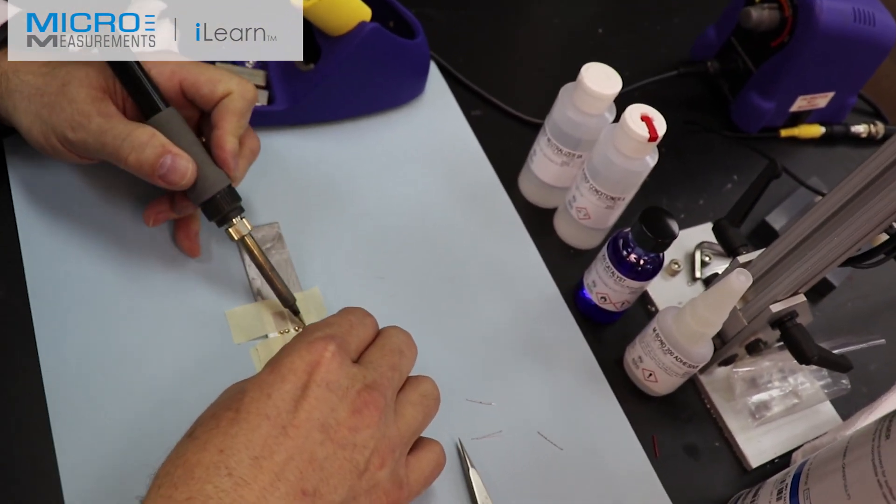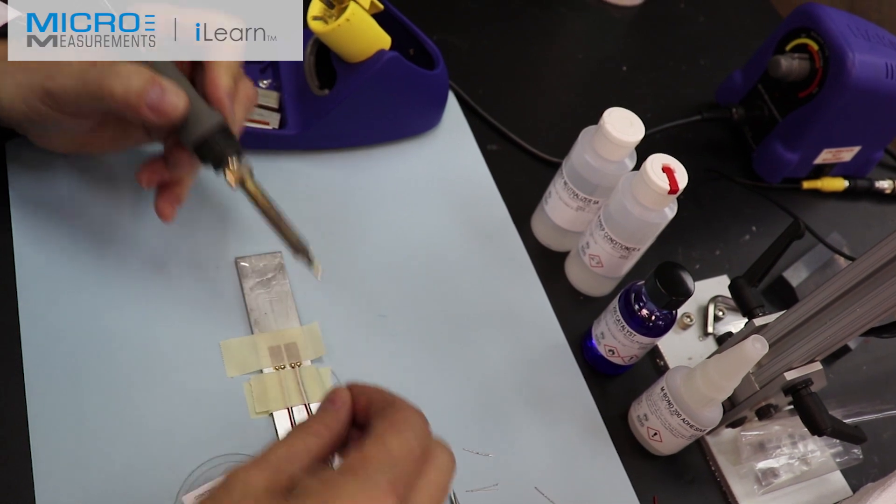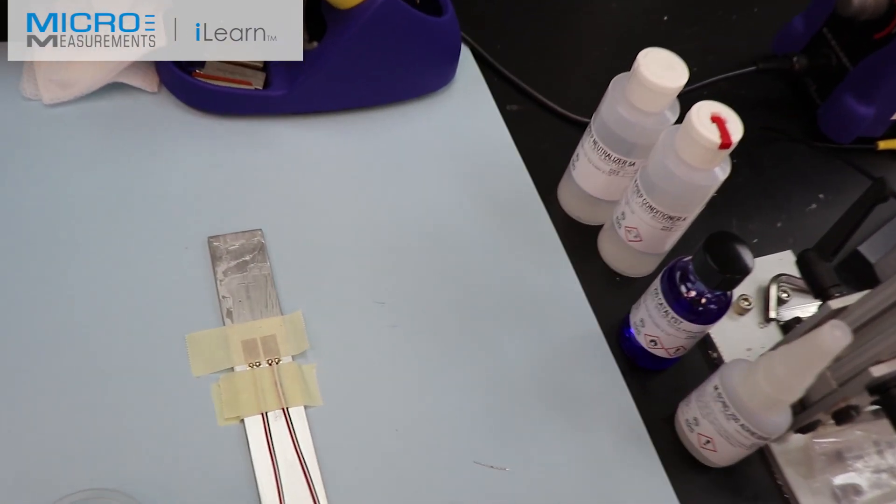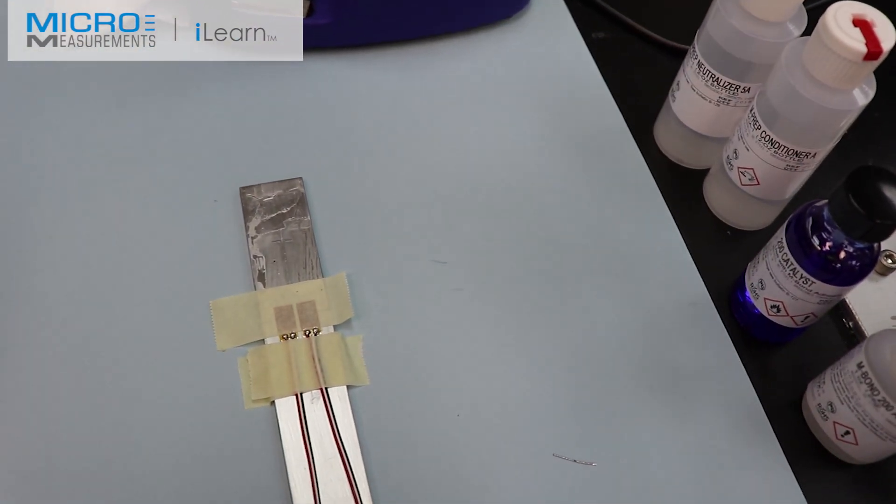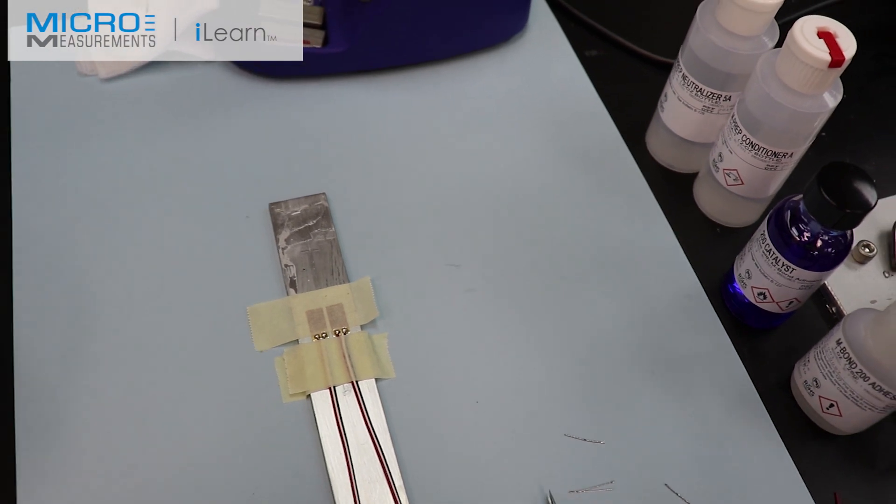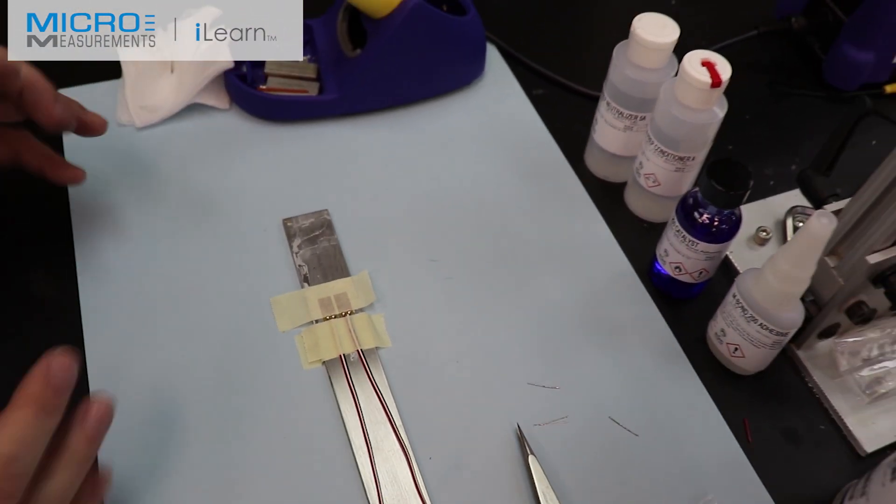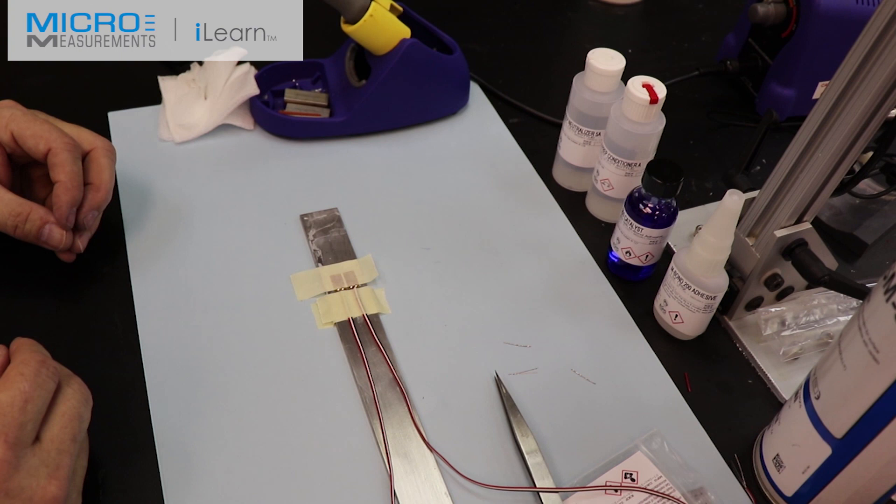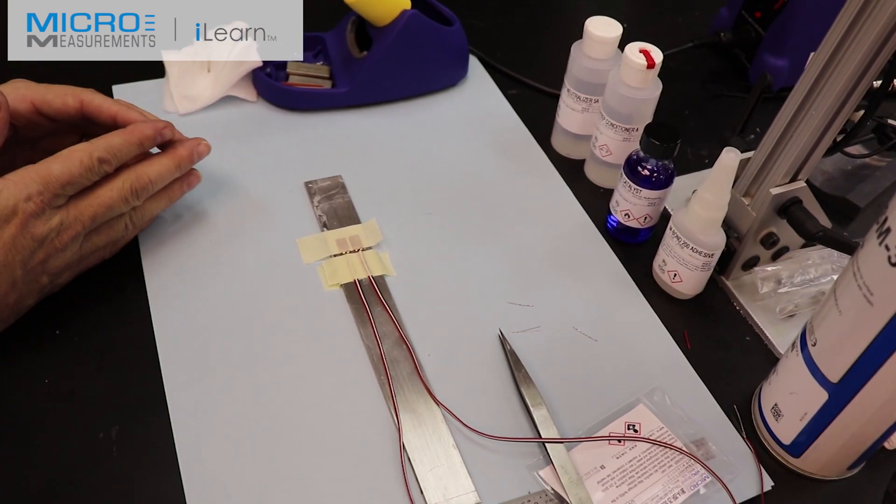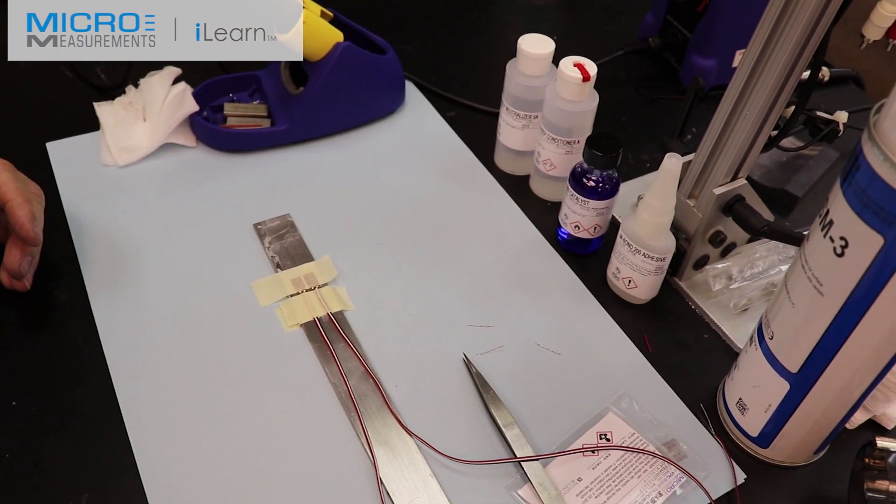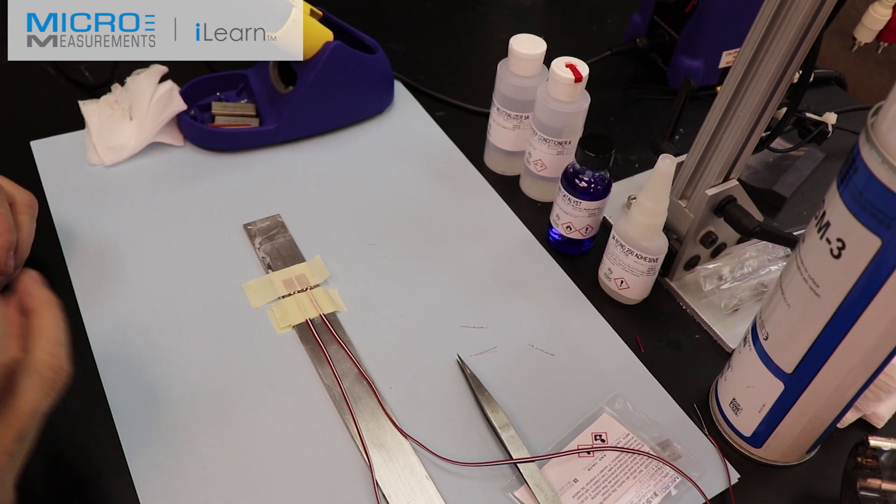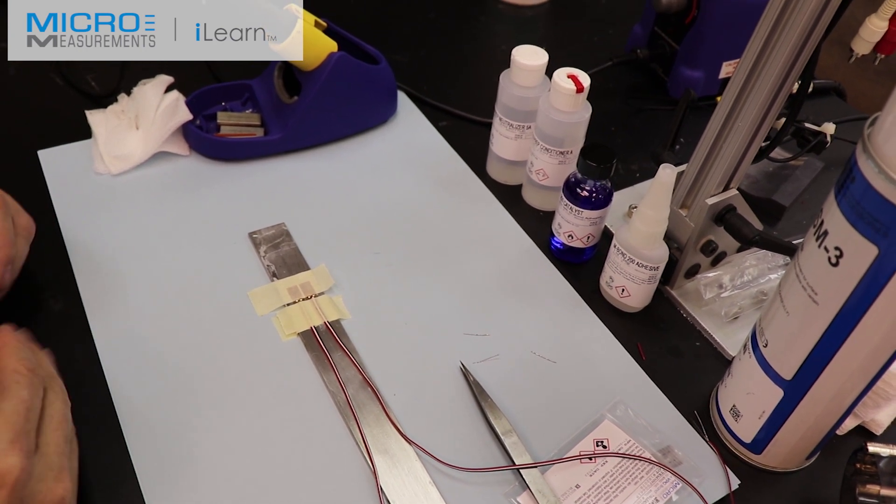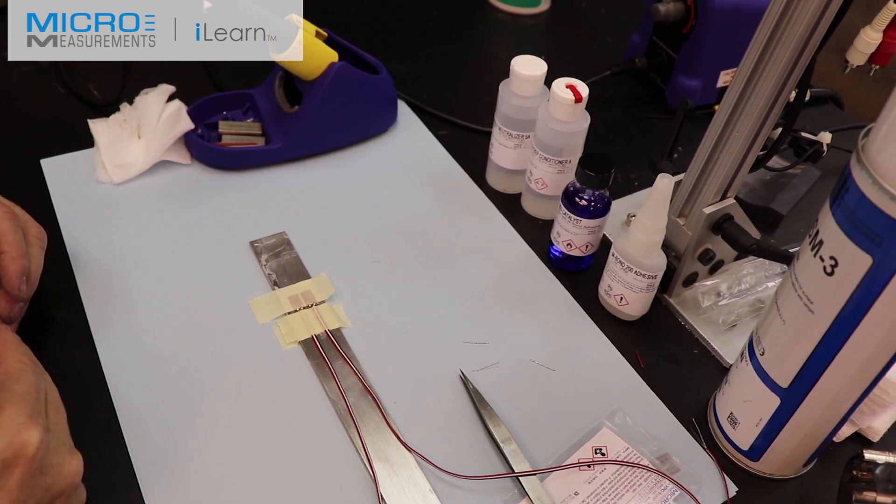Now you might think that you're done at this point and you are done with the wire connections in terms of connecting the leads on the gauge and prepping the tabs and tinning them and all that. But a major part of strain gauge installation is cleaning everything up.